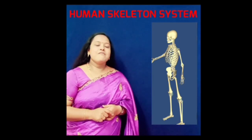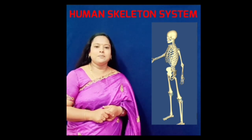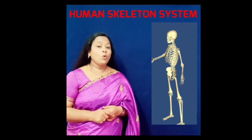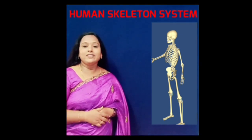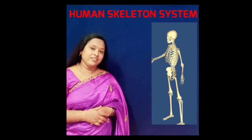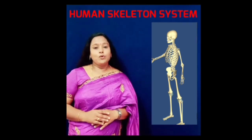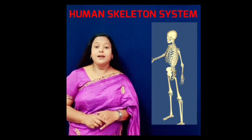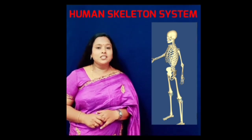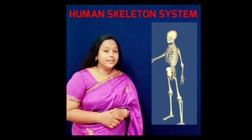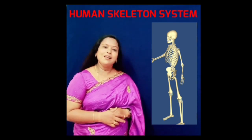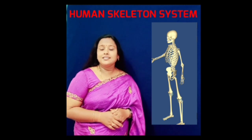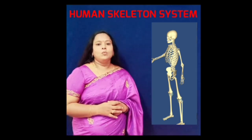Next is about the functions of the skeletal system. The skeleton provides support and holds the body upright. Bones store essential body minerals like calcium and magnesium. Bones are hard from outside but they are soft and spongy from inside. The inside of bone contains a soft substance called bone marrow, and blood cells are made in the bone marrow.